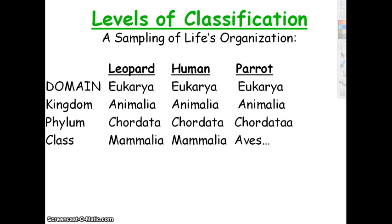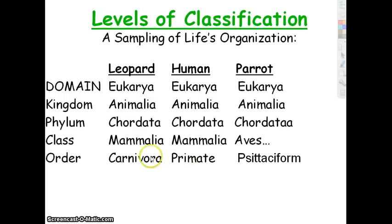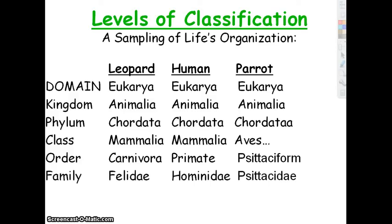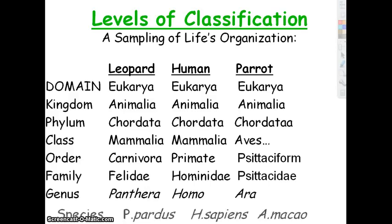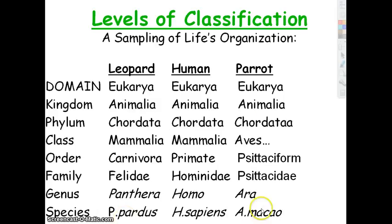At the class level, you see where leopard and human are more closely related than either of us are to the birds, because birds are in a different class — Aves — with characteristics like beaks and feathers. Mammals have different characteristics: giving milk to young, live birth for most. Then order: Carnivora and Primate — now we see human and leopard separate. If an ape were included, apes would be more closely related to humans because they'd share the same order. Then we have family, genus, and species.